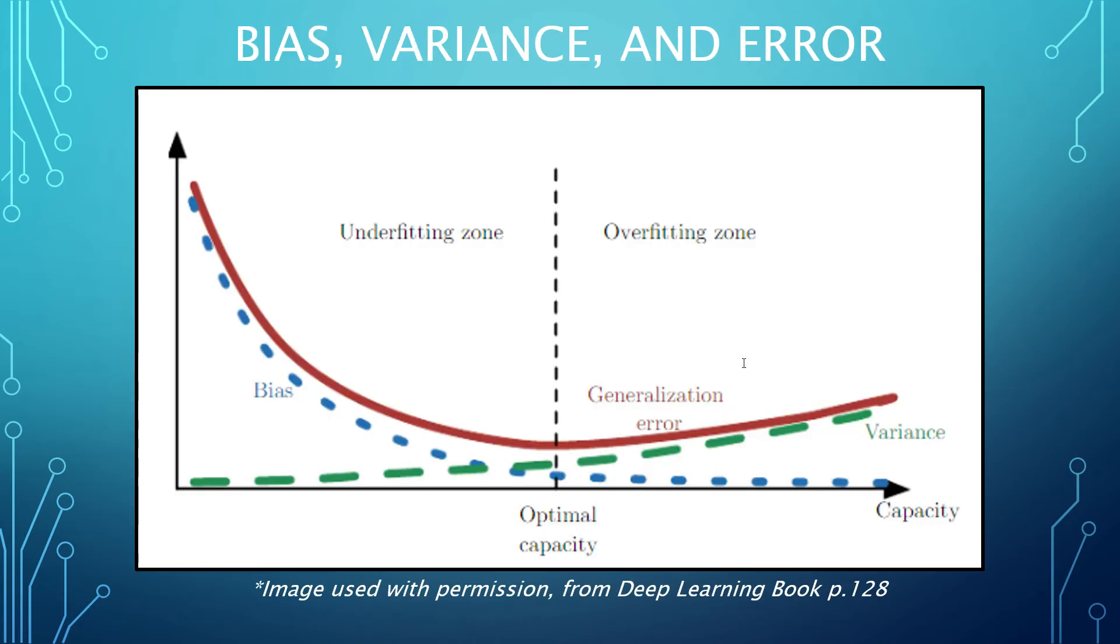This chart extends the analogy I mentioned earlier, showing how bias tends to decrease with model capacity and variance tends to increase. As I had mentioned, this creates a different perspective or explanation for the U-shaped generalization error curve in addition to the interpretation of training and test error changing.